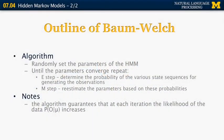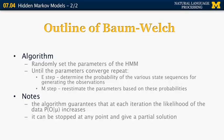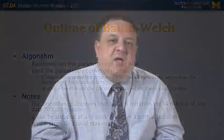A few notes about the EM algorithm: it guarantees that at every iteration the likelihood of the data increases. It can also be stopped at any point and give a reasonably acceptable partial solution, so we don't need to wait until it fully converges. It is also guaranteed to converge to a local maximum if allowed to finish. This has been an outline of the methods used with HMMs for natural language processing.